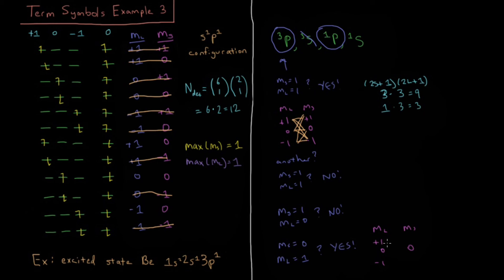So 3 combinations we are looking for here. I'm going to start out with plus 1, 0. That one. 0, 0. There it is. And minus 1, 0.